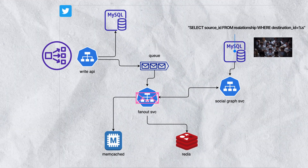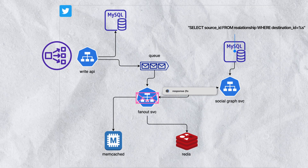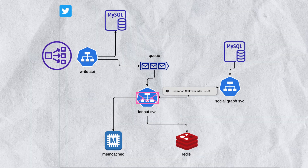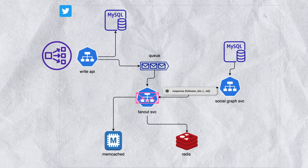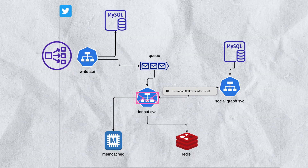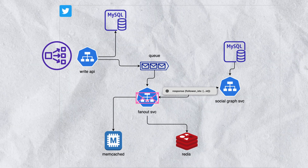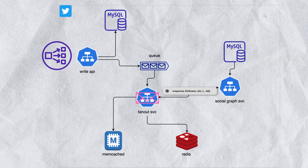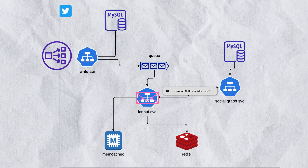The social graph service will then return the list of users that follow the user that sent the tweet back to the fanout service. The fanout service will then start the process of appending the tweet to every user that follows the user that sent the tweet.